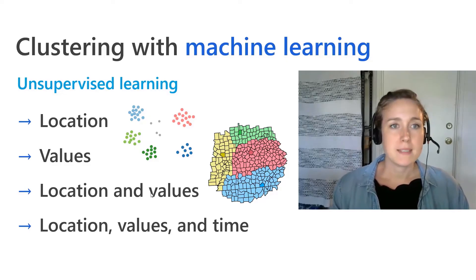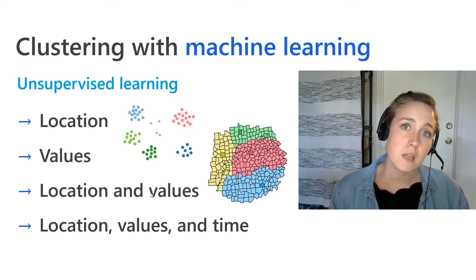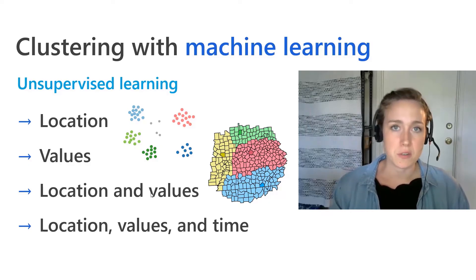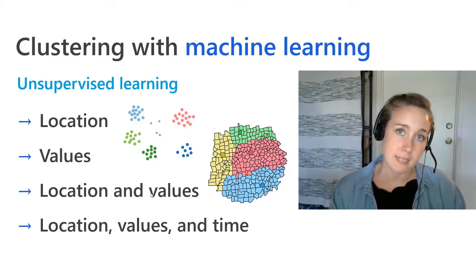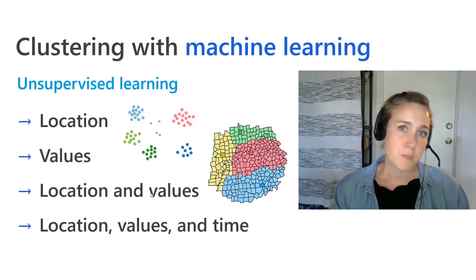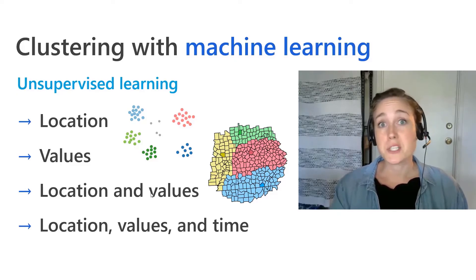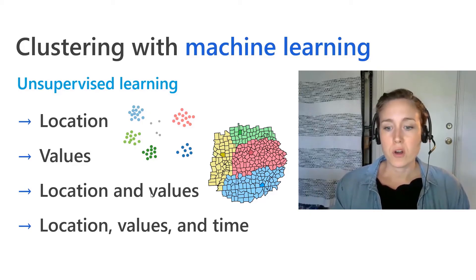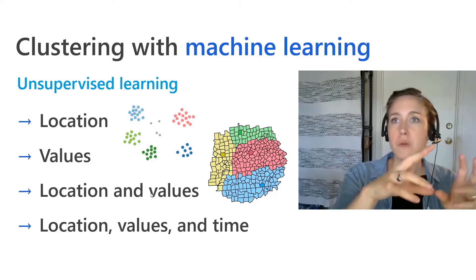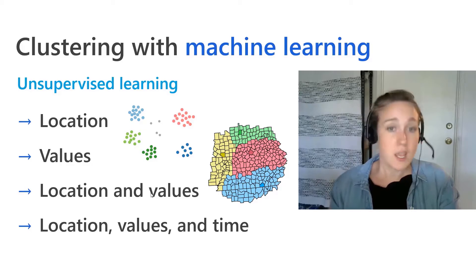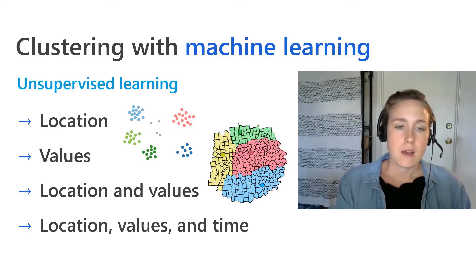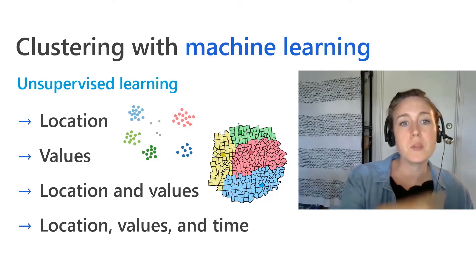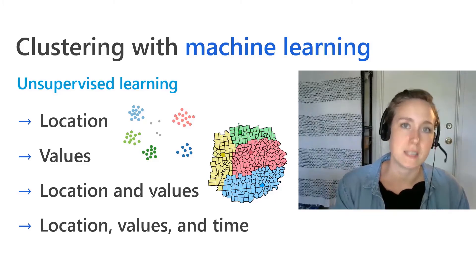That's what makes these clustering tools unsupervised machine learning — we don't say 'this is what a cluster looks like.' The algorithm in a data-driven way figures out what a cluster looks like based on the overall patterns within the data. Sometimes it's based purely on location, and sometimes it's based purely on value — no geography at all. We're looking for a group of features that all have a high value in income, education levels, or other attributes.